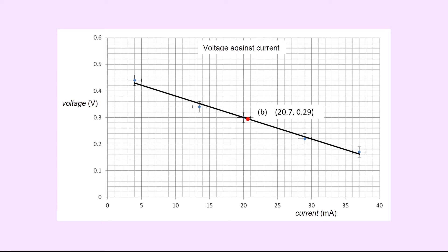We should expect the centroid to lie on the line of best fit, because another rule for plotting the line of best fit is that not only should it pass through all the error bars, but it should also pass through the centroid.